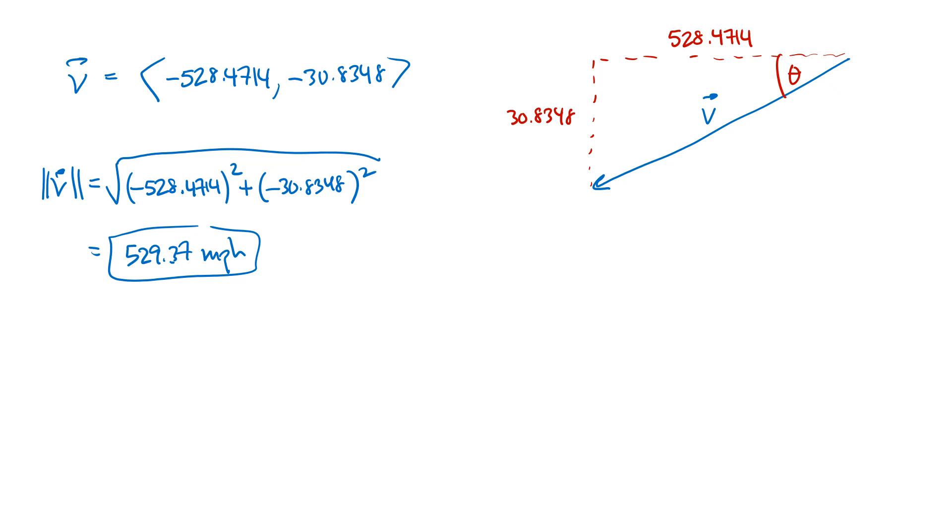So again, using some basic trigonometry, SOHCAHTOA, this time we want the tangent of theta. The tangent of theta is going to be opposite over adjacent. So 30.8348 divided by 528.4714 gives me approximately 0.058347.